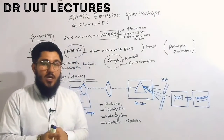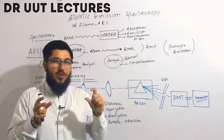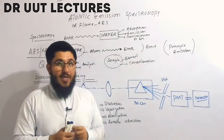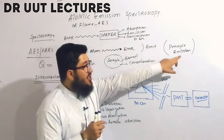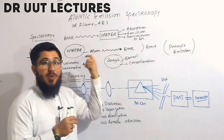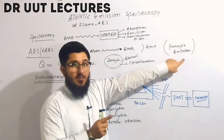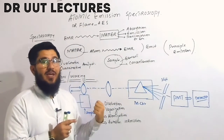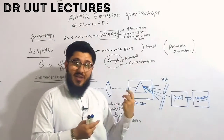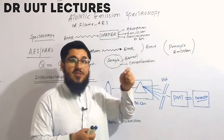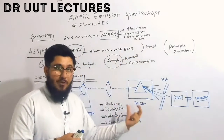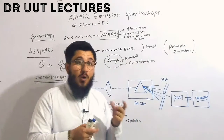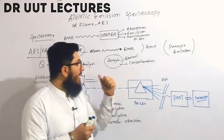The principle of atomic emission spectroscopy is emission. Do not confuse the principle with the working — the working is a separate part of this topic. The principle is simply emission: in this spectroscopy we study the emission process. How this emission process takes place is explained in the working.